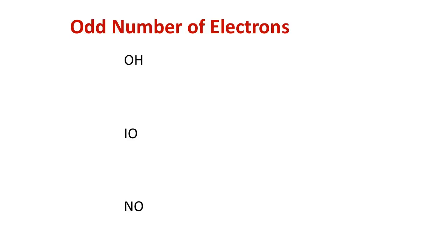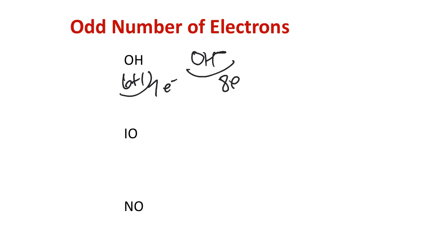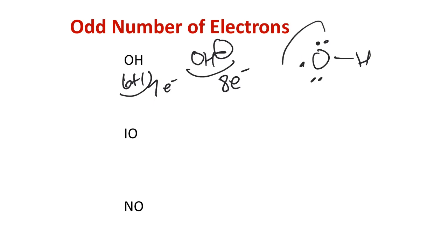Looking at odd electron counts: OH radical has six plus one equals seven electrons total, contrasted with OH⁻ which has that extra electron giving eight. OH⁻ has eight electrons distributed normally. For the radical OH, we kick one electron off oxygen — that's the only electron available — leaving the Lewis structure for uncharged OH. One atom with an odd count has to violate the octet rule; interestingly, in this arrangement both atoms have zero formal charge.